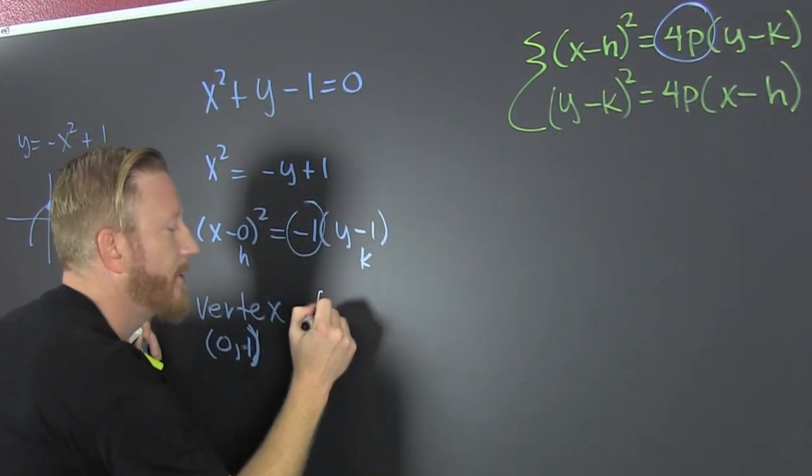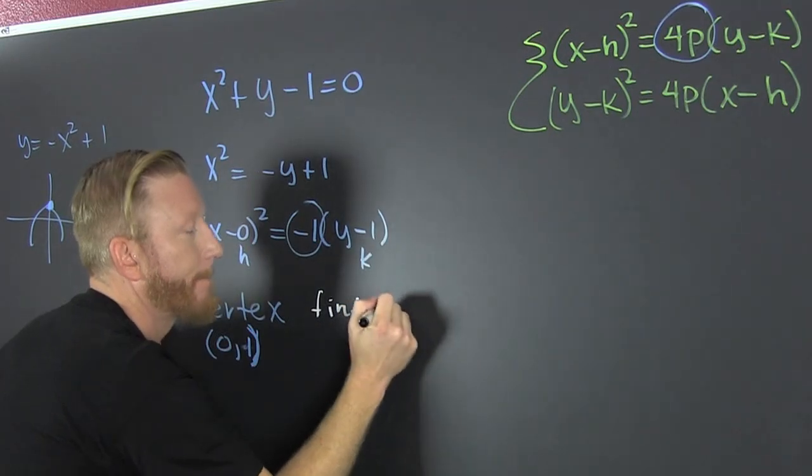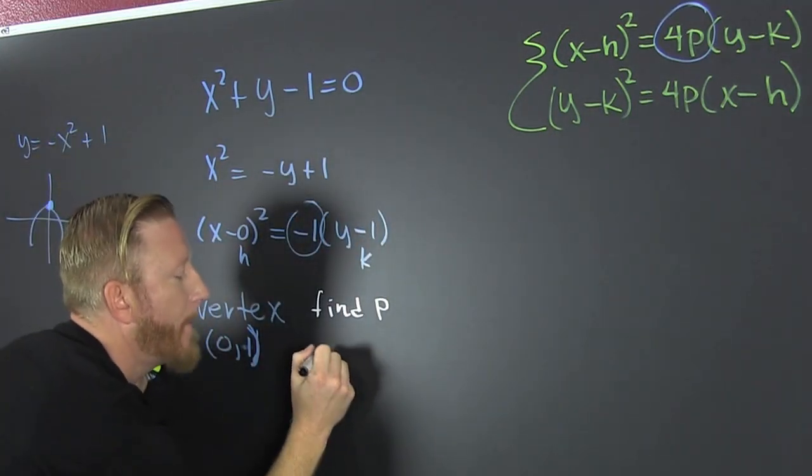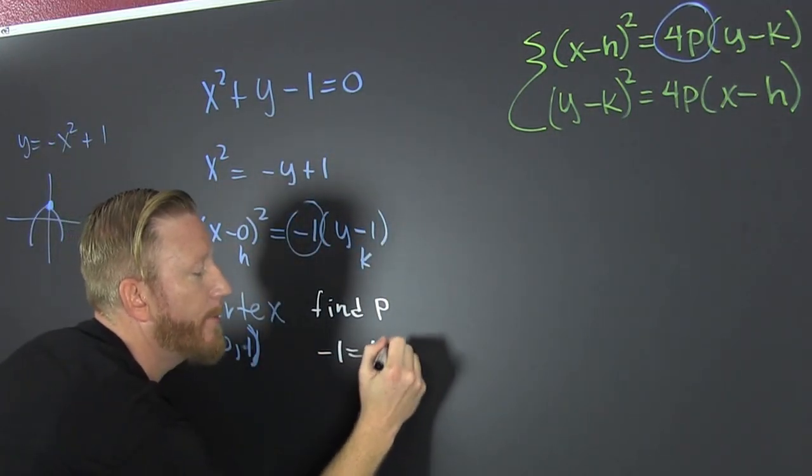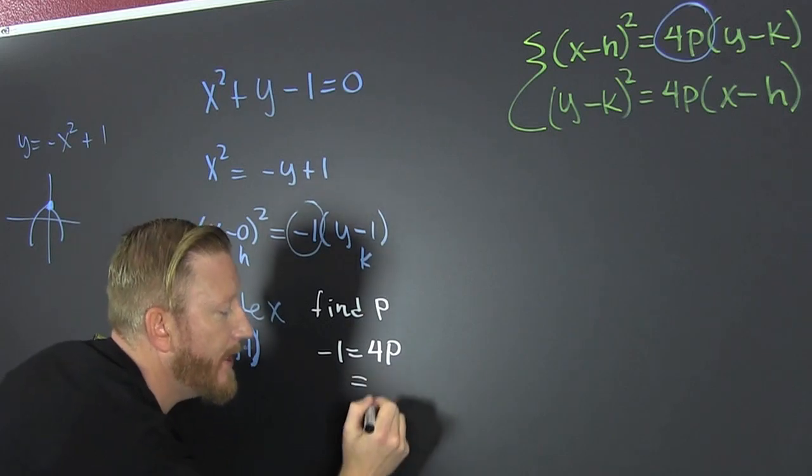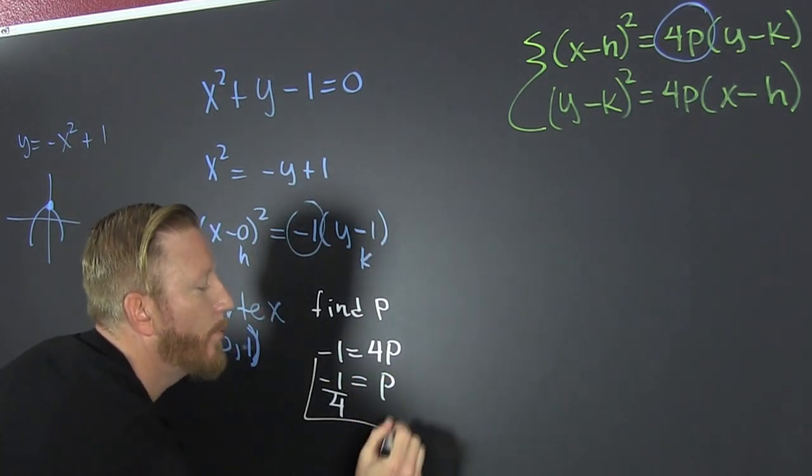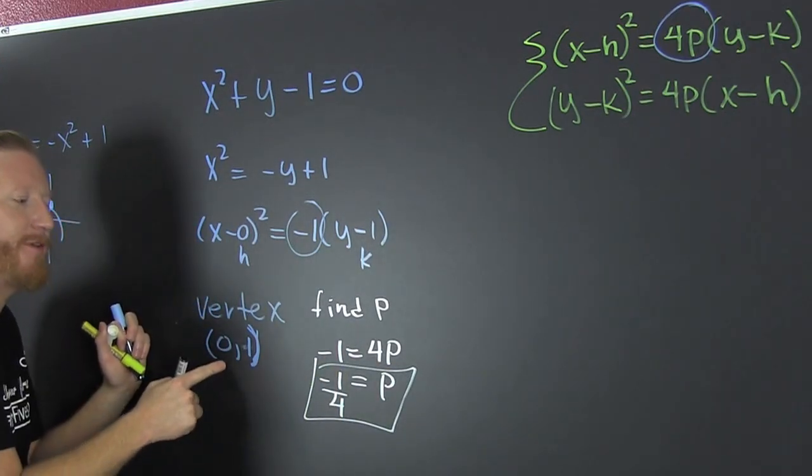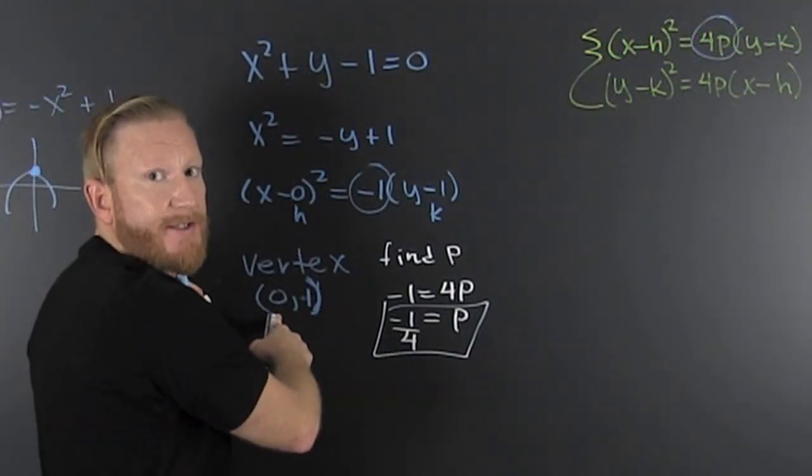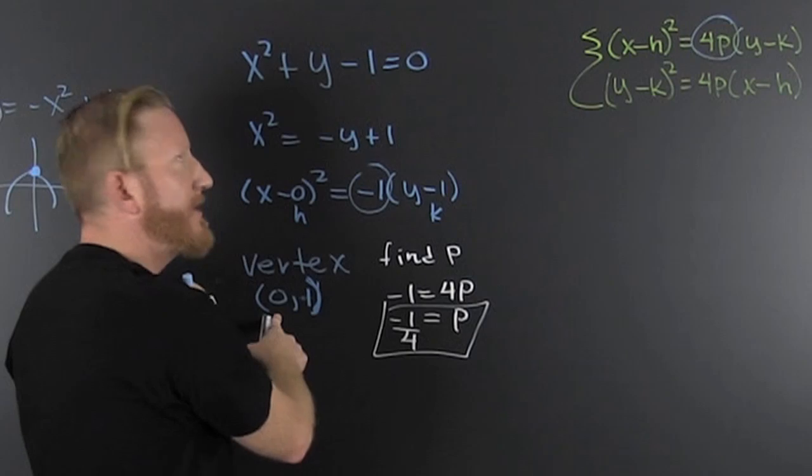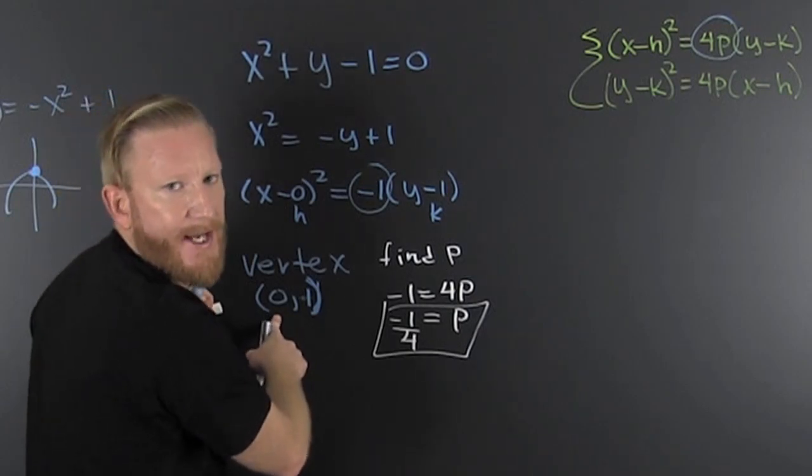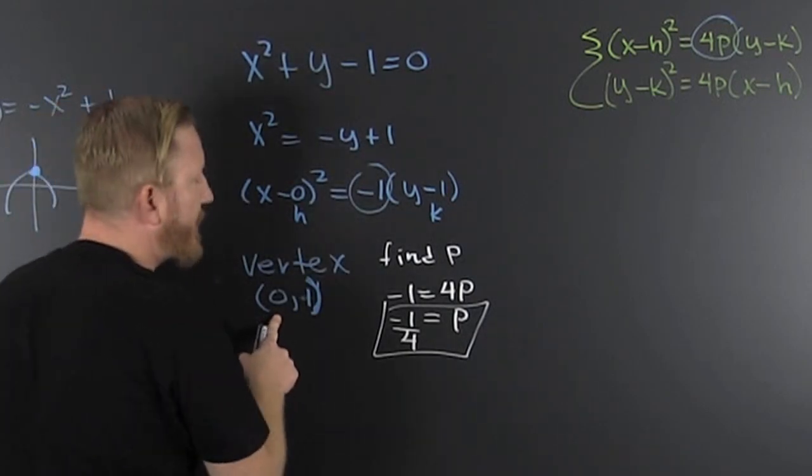So find p. So then negative one is equal to four p. So it turns out to me that my p is negative one fourth. Now what's that? That's the distance away from the vertex that the focus and the directrix lie.